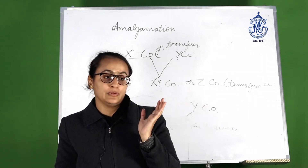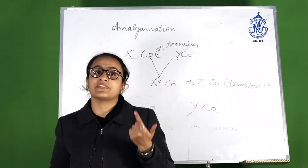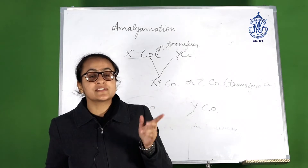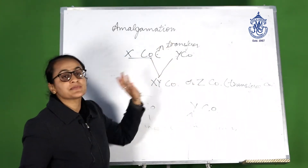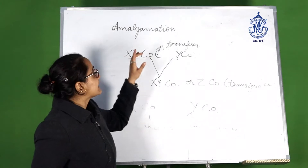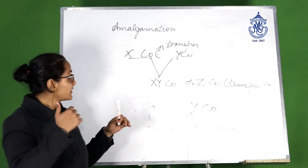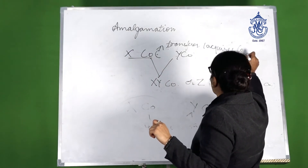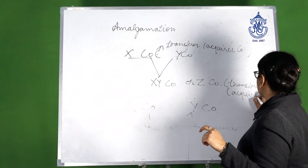Accounting Standard 14 is no longer in existence. In its place, Indian Accounting Standard 103 is now in practice. Due to IND AS 103, certain changes have been introduced. In IND AS 103, which stands for business combinations, the terms transferor and transferee are replaced. The company whose business is being sold or going into liquidation is known as the acquiree company, and the company taking over the business is known as the acquirer company.